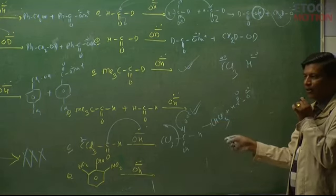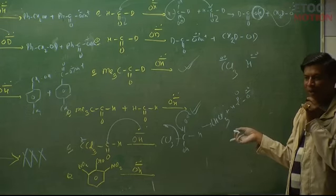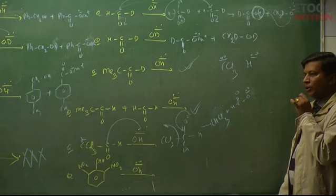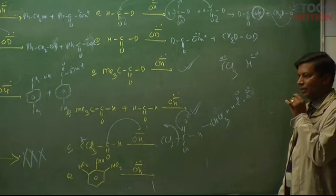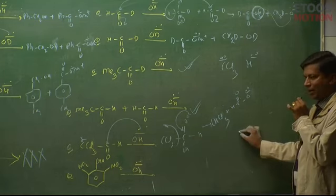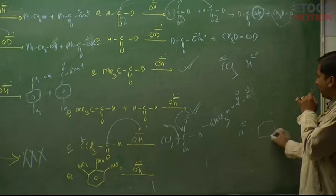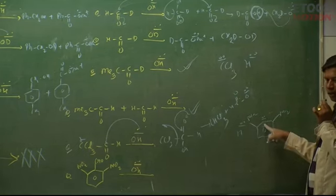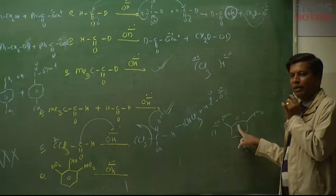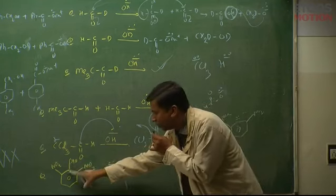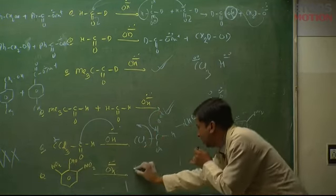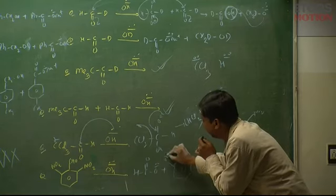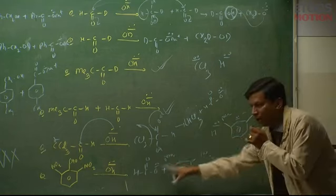Similarly with dinitrobenzaldehyde: benzene ring as leaving group — the negative charge is highly stabilized by the ring and nitro groups. Benzene ring has better leaving ability than hydride. So the ring leaves and the product is HC(=O)O⁻ + di-nitrobenzene anion. These are special cases where leaving group ability determines product.